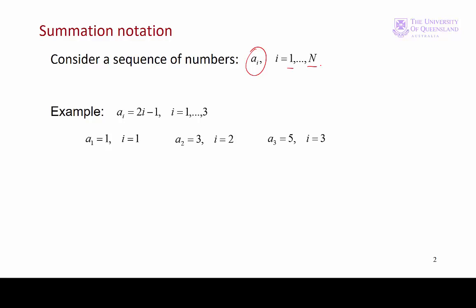There might be particular values, or we might have a representing some formula. Here we've got a simple one, where the element is 2 times i minus 1. And we're going from 1 to 3. The first element of the series will be a1 equal to 1, 2 times 1 minus 1, and so on.